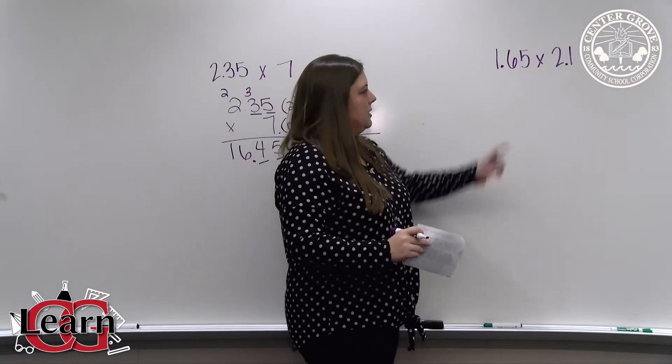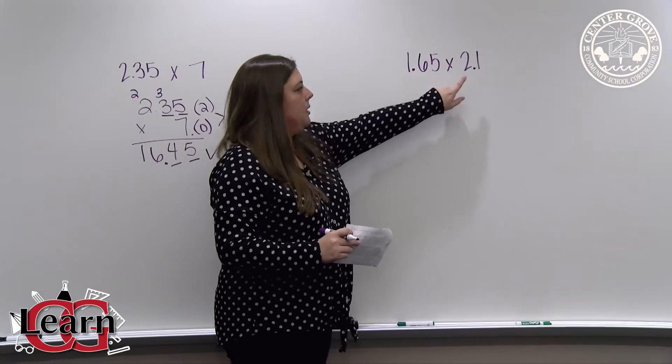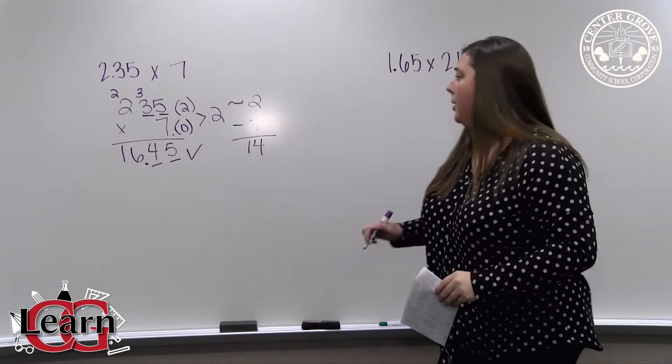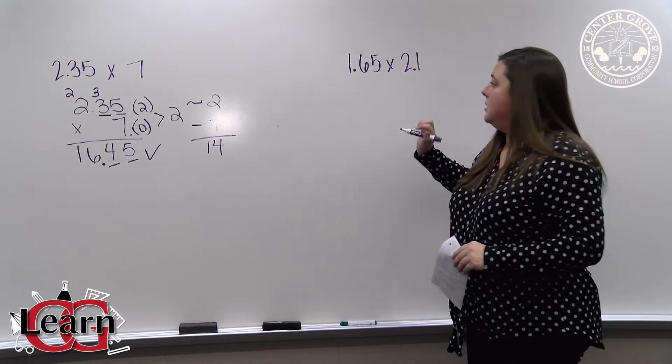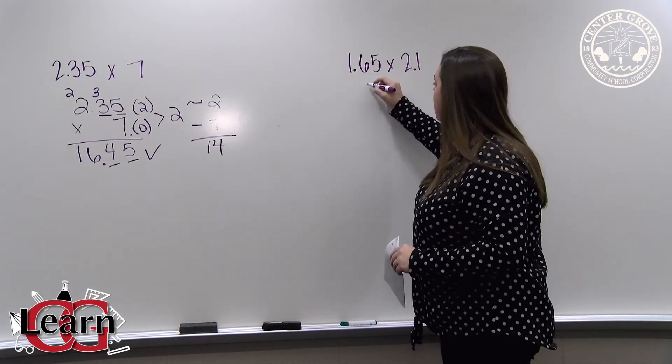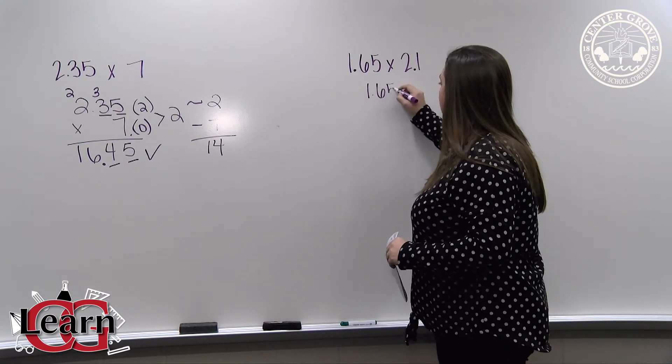For our second example, we have a decimal number being multiplied by a decimal number. So again, the factor with the most digits is placed on top. So 1 and 65 hundredths will be written on top.